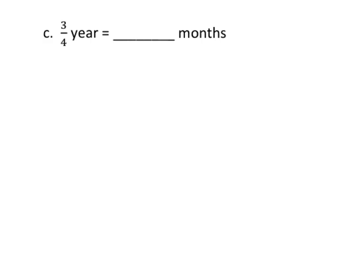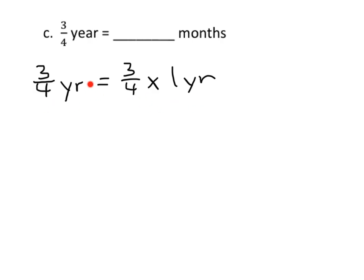So they're going to begin by saying: three-quarters of a year is equal to three-quarters of one whole year. So that's three-quarters times one year. It's important that students understand this connection — that three-quarters of a year and three-quarters times one year is the same thing. That's why we put an equal sign here. And now we're going to replace one year with twelve months.